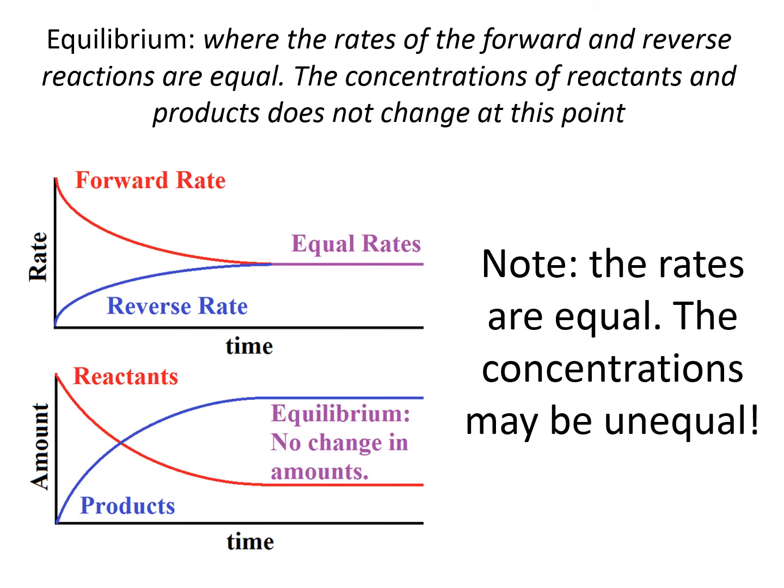We can show this in graph form. At the start of the reaction, at time zero, the rate of the forward reaction is high and it slowly decreases as reactants are turned into products. And the rate of the reverse reaction is zero and increasing as products turn into reactants. And then at the point of equilibrium, the rate of the forward and reverse reaction is equal and that stays that way.